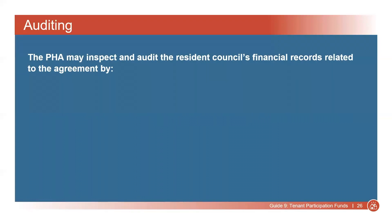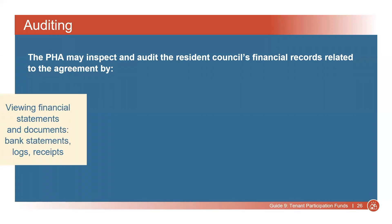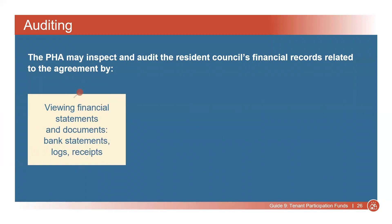The housing agency is permitted to inspect and audit the resident council's financial records related to the agreement. The audit looks at three main areas. First, financial statements and documents. For example, do bank statements match the resident council's logs? And if cash was used, are there receipts? And was any change deposited?